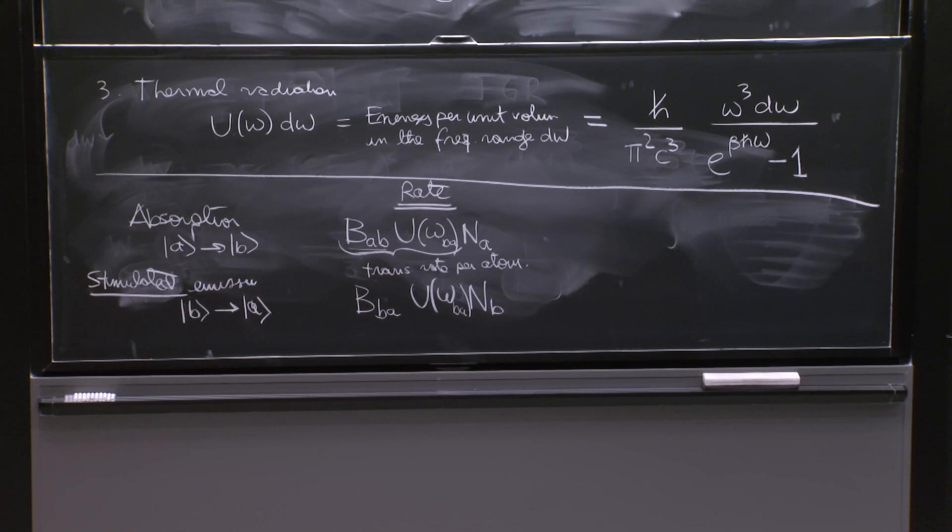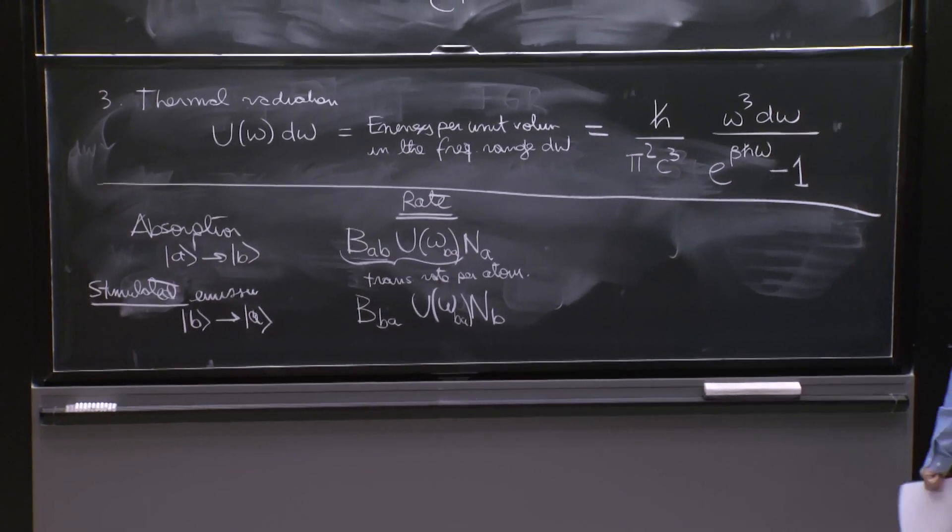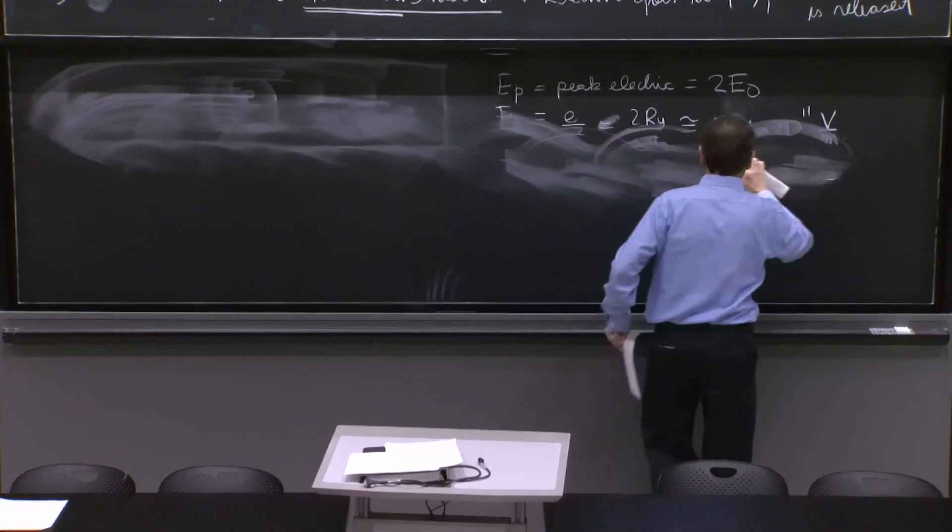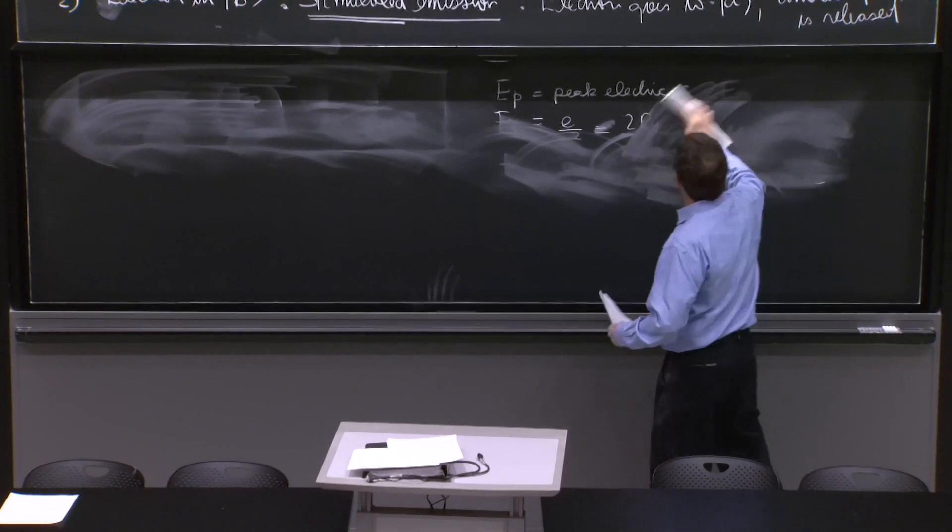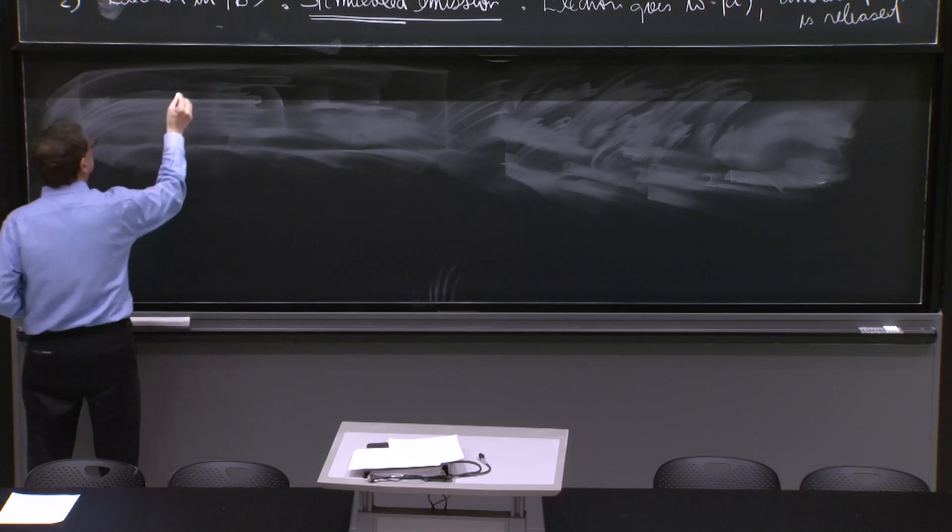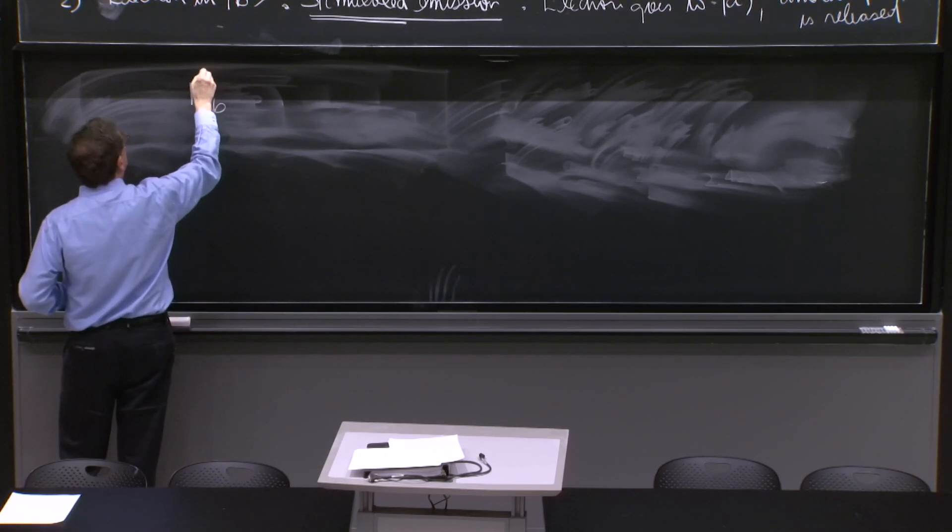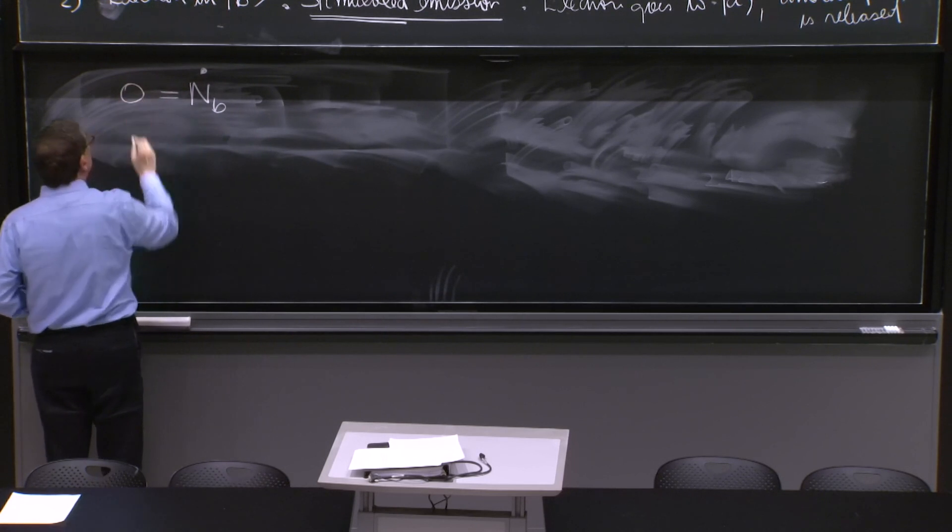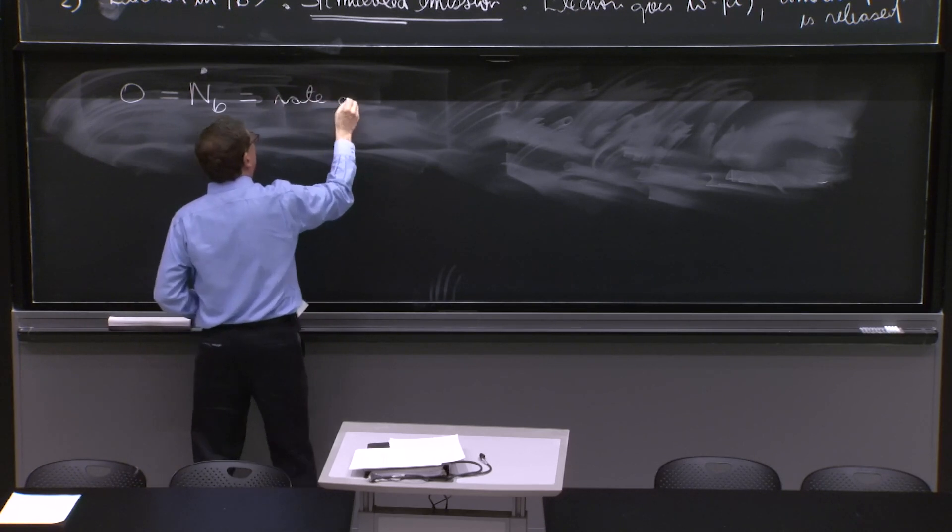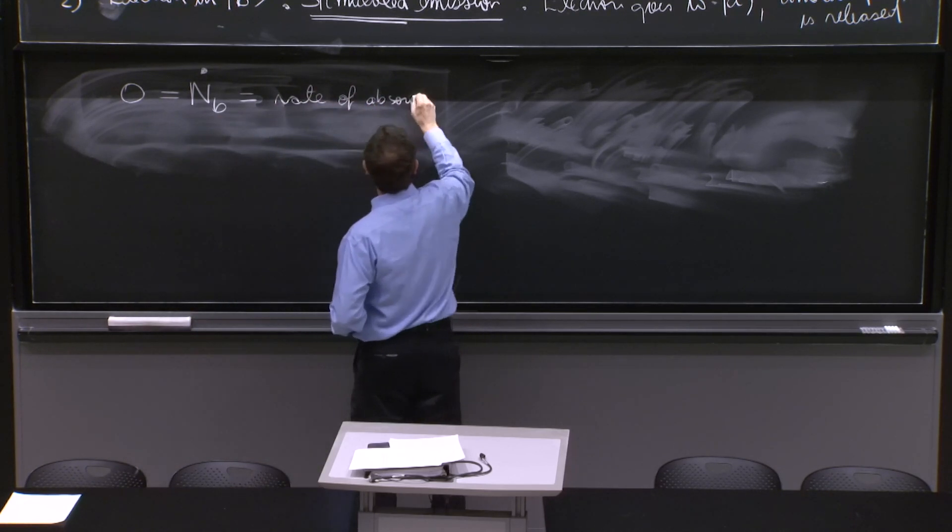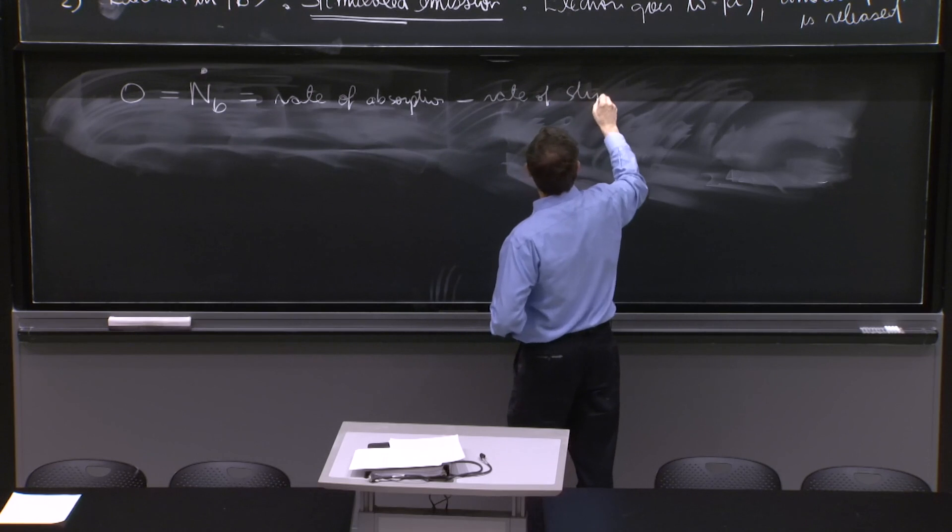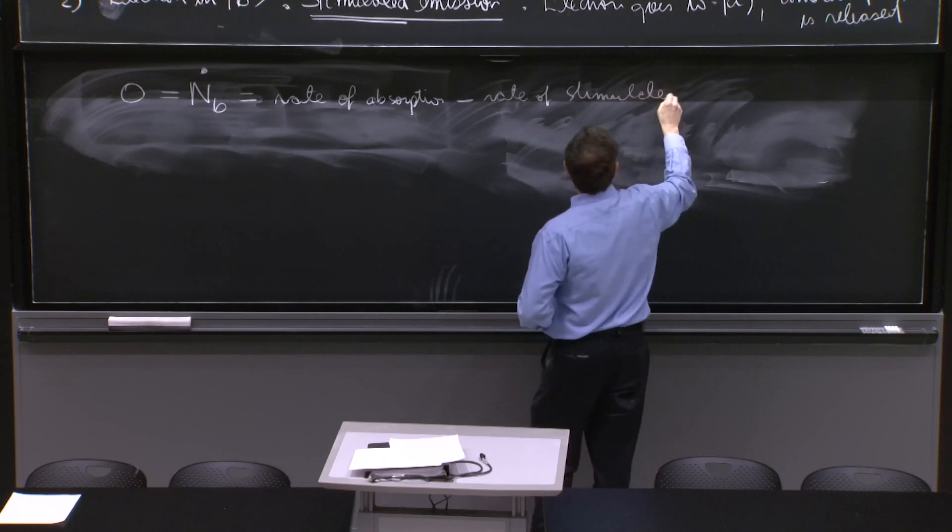We're trying to get equilibrium, so we want the transitions to equilibrate and therefore the populations not to change. So let's look, for example, you could look at either one, but you can look at NB dot. It should be 0.